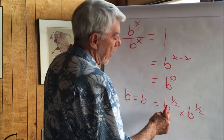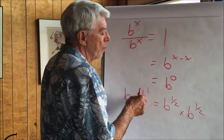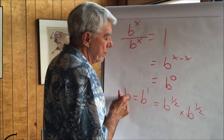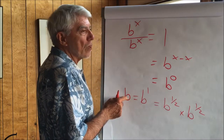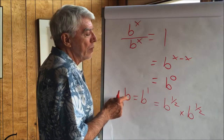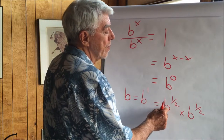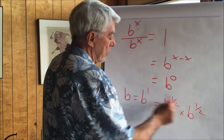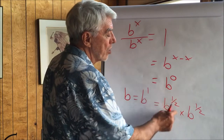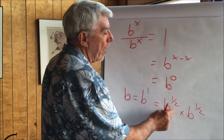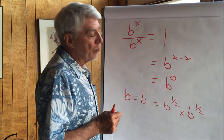The question is: what number could we multiply to get an exponent of one? That would be b to the one half times b to the one half, because when we add the exponents we get one. The square root of b is a number multiplied by itself that results in b. Here we show b to the half multiplied by b to the half gives us b. So b to the one half is simply the square root of b.